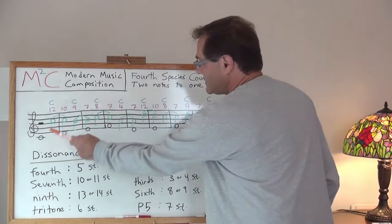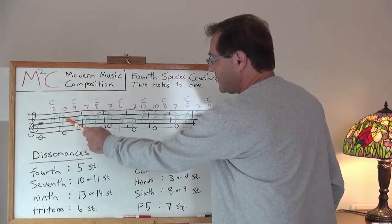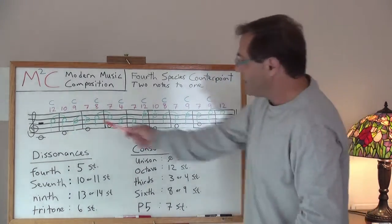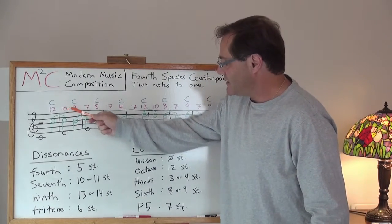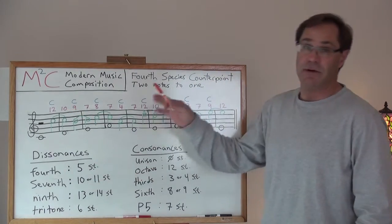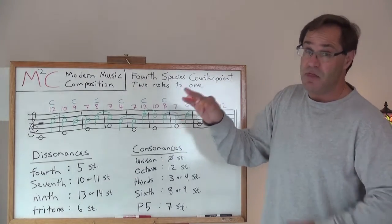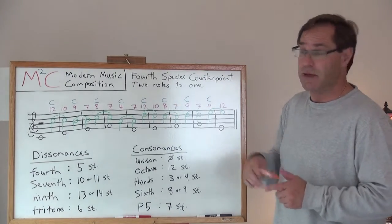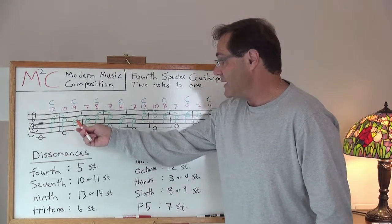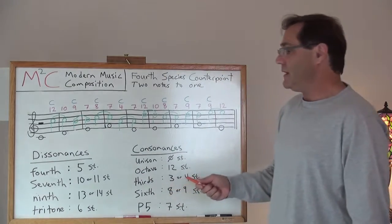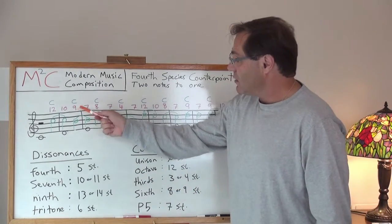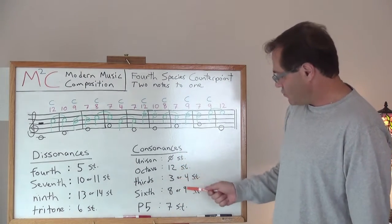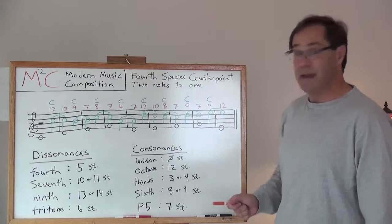So here we've got C to C. Our C now gets suspended over into the next measure. Cantus firmus is an E. That gives us 10 semitones. That's dissonant. As we learned in the previous lesson, that's what makes our suspension - that's what makes the tie a real suspension. Now what we do is we need to resolve that dissonance into a consonance. So it resolves down a half step with a major sixth.